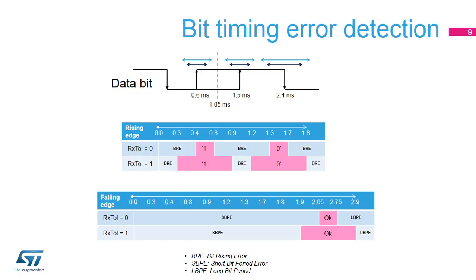This slide describes the various bit timing errors during message reception. A bit rising error, or BRE, is set by hardware when a rising edge is detected within a data bit outside of the Rx windows configured by RxTOL. Upon BRE detection, CEC message reception is optionally aborted if bit BRE_STP is set to 1, and an error bit is optionally generated on the CEC line if bit BRE_GEN is set to 1. A short bit period error, or SBPE, is set by hardware when a falling edge is detected ending the data bit before that expected by the RxTOL margin. Upon SBPE detection, an error bit is always generated on the CEC line and reception is aborted.